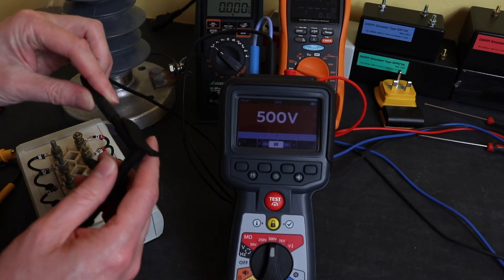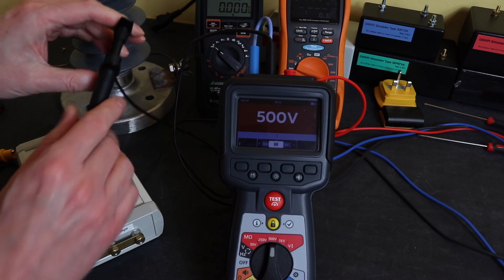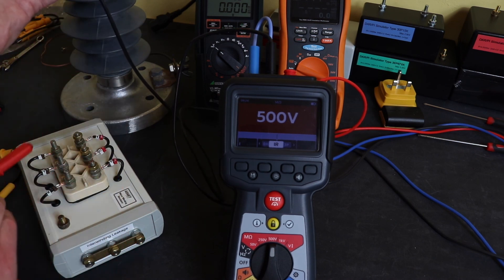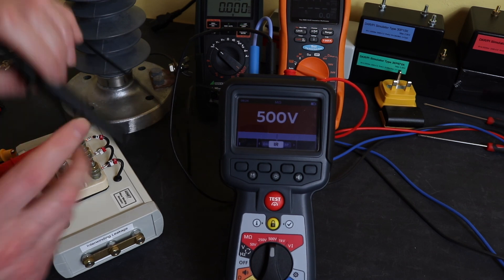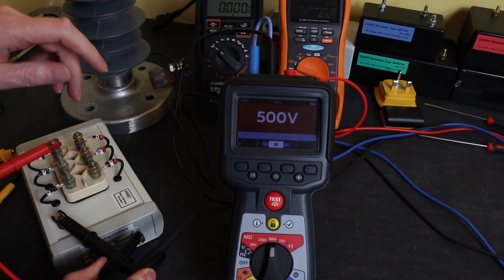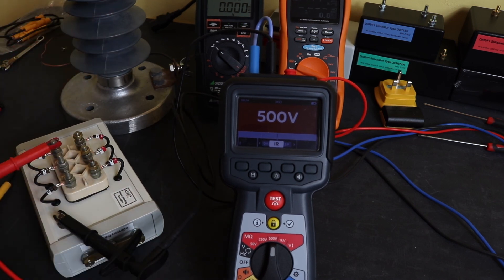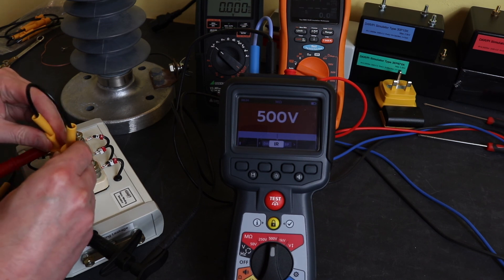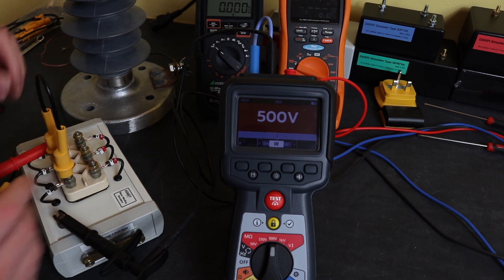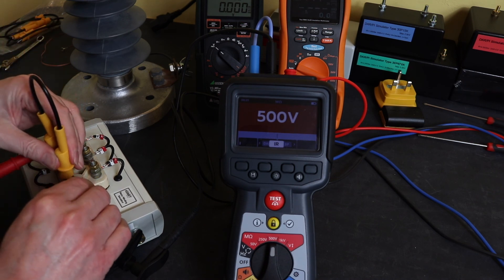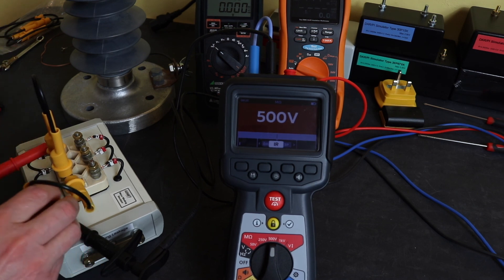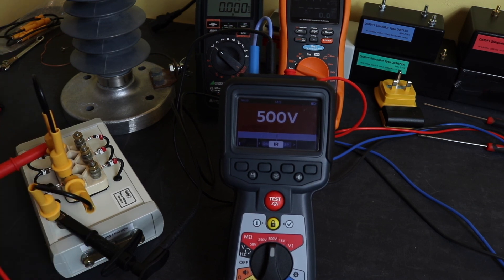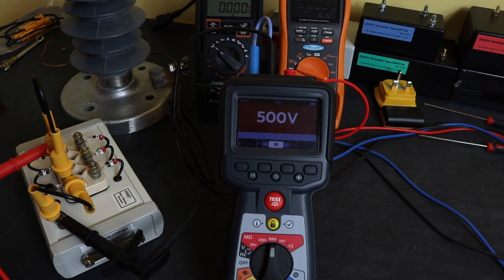You would set up a standard two-wire insulation test and then the shield gets plugged into the guard terminal. For this I have my winding simulator set up in an open winding configuration. One lead onto one winding, one lead onto the earth, then link together the two phases not in test and take them down to earth.